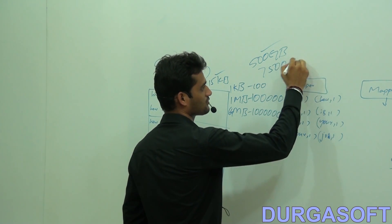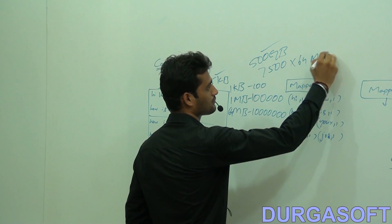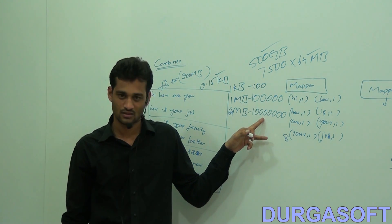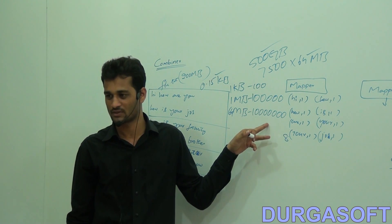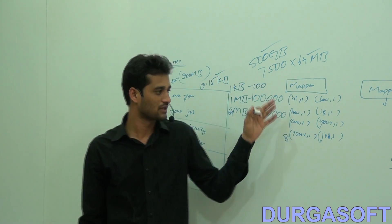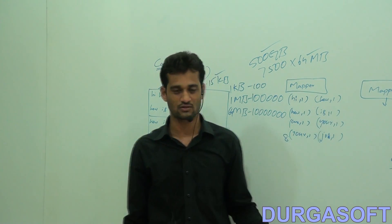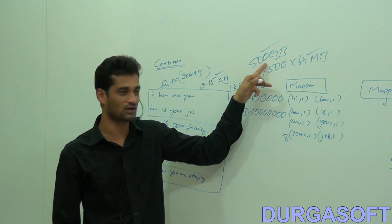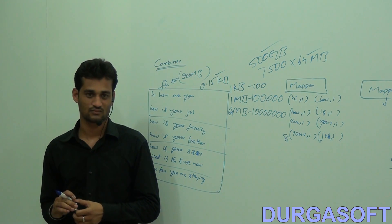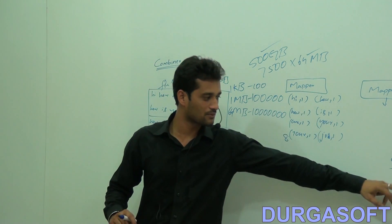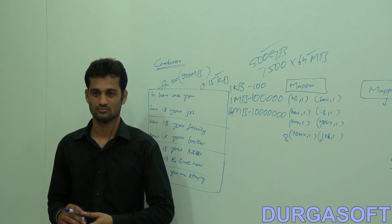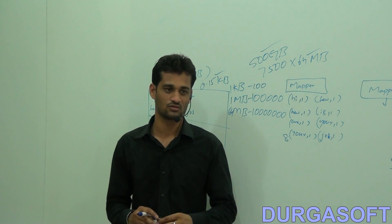There will be about 75,000 64 MB blocks. For one 64 MB block, one mapper produces 1 crore key-value pairs. If the file is 500 GB with 7,500 mappers, how many key-value pairs will be received in total? 7,500 × 1 crore key-value pairs that the reducer must combine.